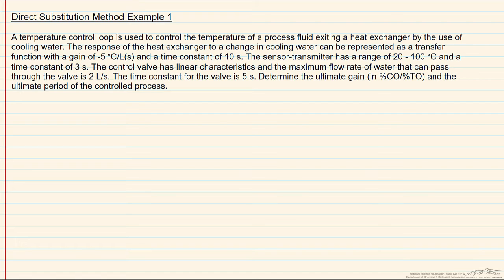In order to use the direct substitution method we need to know the characteristic equation. The characteristic equation is one plus all the parts of the open loop gain, which will include the process, the valve, the controller, and the transmitter. So what we'll now do is go through each of these to evaluate them.